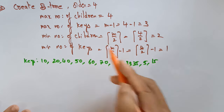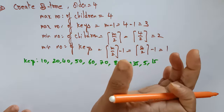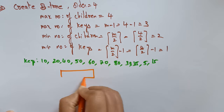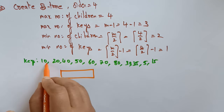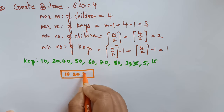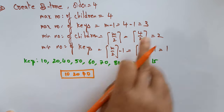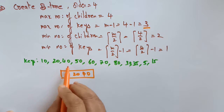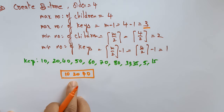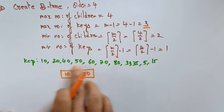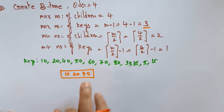Each node can have only 3 keys and 4 children. So first, insert 3 keys: 10, 20, 40 — because the maximum number of keys is only 3. Now I want to insert 50. My node is already filled with 3 keys: 10, 20, 40. I need to split.